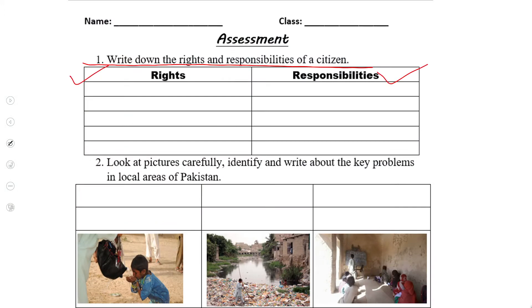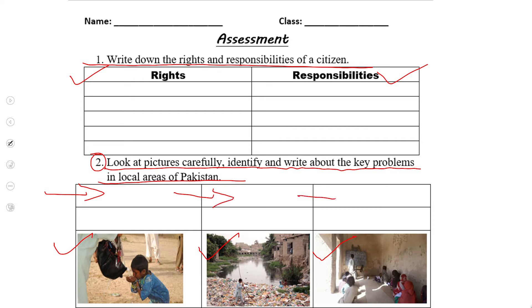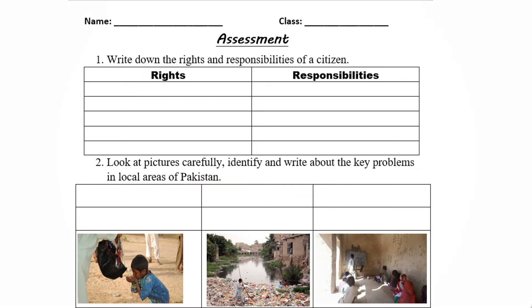After that, move forward to question number two. Look at the pictures carefully, identify and write about the key problems in local areas of Pakistan. There are some pictures of problems that occur in local areas — you need to identify what each problem is and write it above each picture.